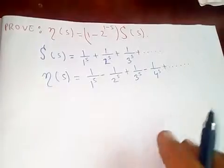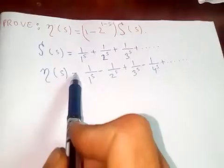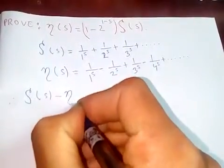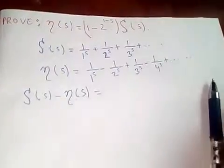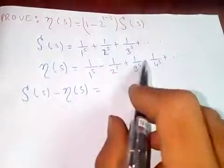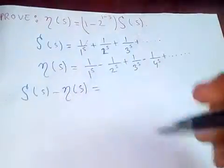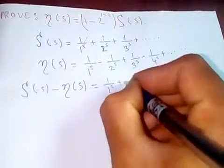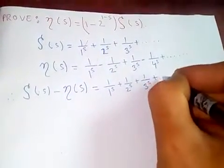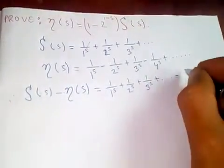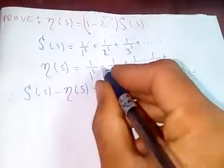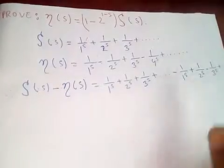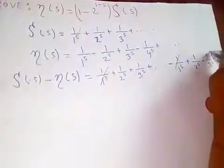Since we need to relate these, I'm going to subtract eta(s) from zeta(s). When I do this subtraction, all the negative terms become positive and all the positive terms become negative. So zeta(s) minus eta(s): expanding, we get 1/1^s + 1/2^s + 1/3^s + ... minus (1/1^s - 1/2^s + 1/3^s - ...). The 1/1^s terms cancel, the 1/3^s terms cancel, and so on.